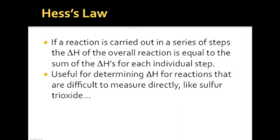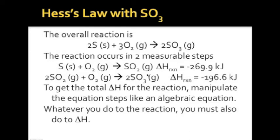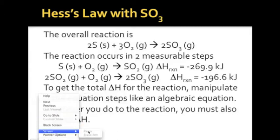So the example that we're going to use is the production of sulfur trioxide. And so the overall reaction for sulfur trioxide looks like this. You have two sulfurs plus three oxygens react together to give us these two sulfur trioxides. This reaction is really hard to measure the delta H of. But these two individual steps, we know the delta H of. So the reaction occurs in these two steps. And to get the total delta H of the reaction, you just algebraically manipulate these guys and then put them together. And whatever you do to the equation, you also have to do to delta H. So that looks like this. So this was your overall reaction. Two sulfurs plus three oxygens gives us two sulfur trioxides.